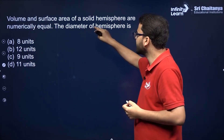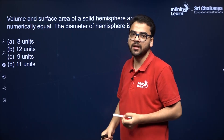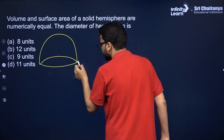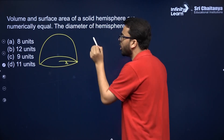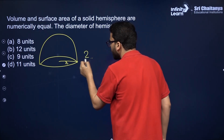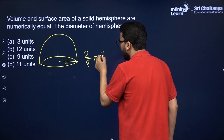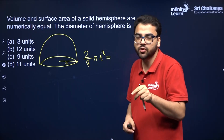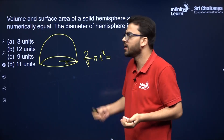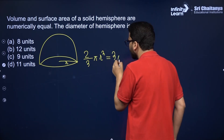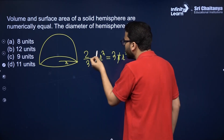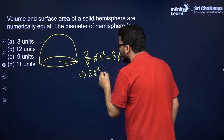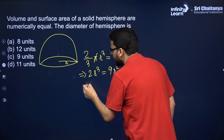Volume and surface area of a solid hemisphere are numerically equal. So the volume of a hemisphere is (2/3)πR³, and this equals its surface area. The surface area of a solid hemisphere is 3πR², while that of a hollow hemisphere is 2πR². Since this is solid, it will be 3πR². You can cancel out π. Do not cancel R yet because you will get two values. So this gives 2R³ = 9R².